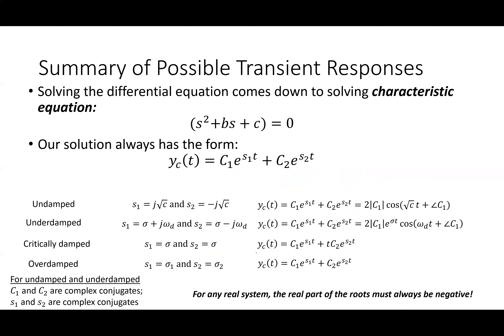There are basically four different forms of the solution. Using the quadratic formula on s² + bs + c = 0, s equals (−b ± √(b²−4c)) / 2, since the leading coefficient is one. The discriminant b²−4c controls what the solution looks like, and the b term always controls the losses in the system.